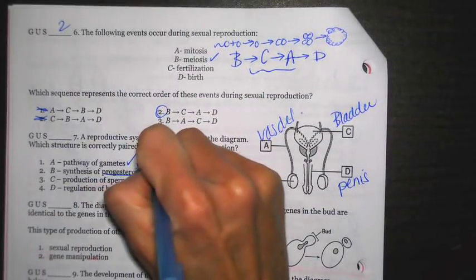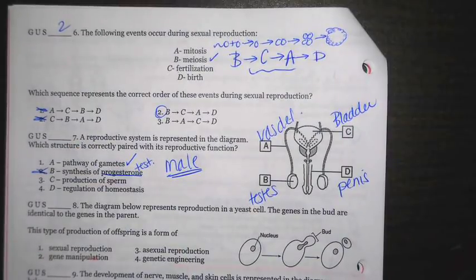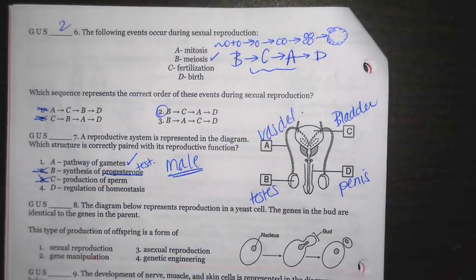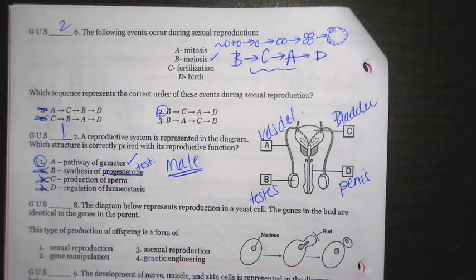So A says pathway for gametes. Okay. That's true. Again, though, let's see if there's a better answer. B says synthesis of progesterone. Actually, that makes testosterone. So that's not going to be it. C says production of sperm. Well, that's the bladder. The bladder doesn't make sperm. The bladder stores urine until it gets released from the body. And then finally, we have D, regulation of homeostasis, which is the penis. But the penis is really just responsible for the delivery of sperm into the female. So the best answer choice there is going to be one.